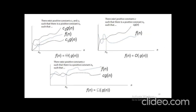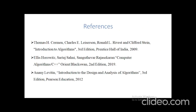In summary, we have seen three notations: Big O notation, Omega notation, and Theta notation. Big O represents the worst case — T(N) should always be less than c·g(N), ignoring cases before N₀. Omega represents the best case — T(N) should always be greater than c·g(N). Theta represents the average case — T(N) should be between c₁·g(N) and c₂·g(N). Thank you.